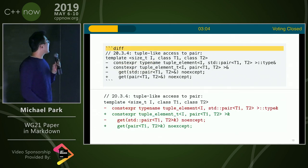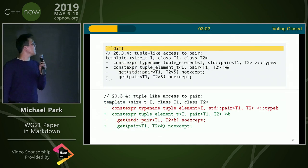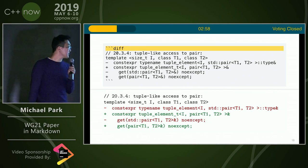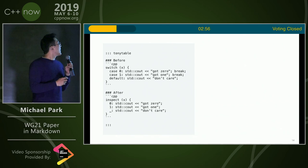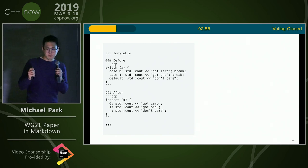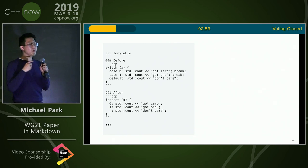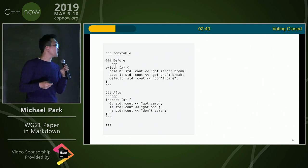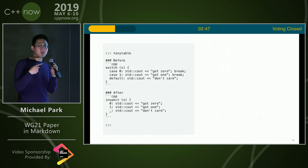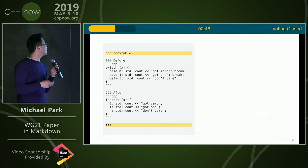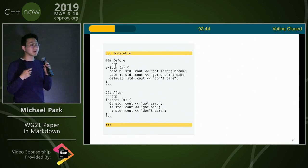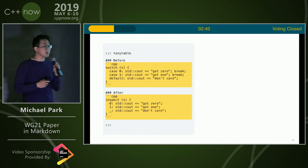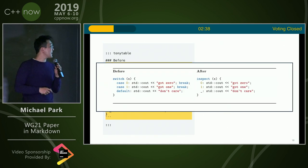This is how you write a diff. You specify diff, write it as you normally would, and you get your color coding. Another feature: if you have Markdown tables with side-by-side code examples, it can get harder to manage, so this is a Tony table. You specify the beginning and end of a Tony table, here are the headers before and after, then two code samples, and this is what you get.